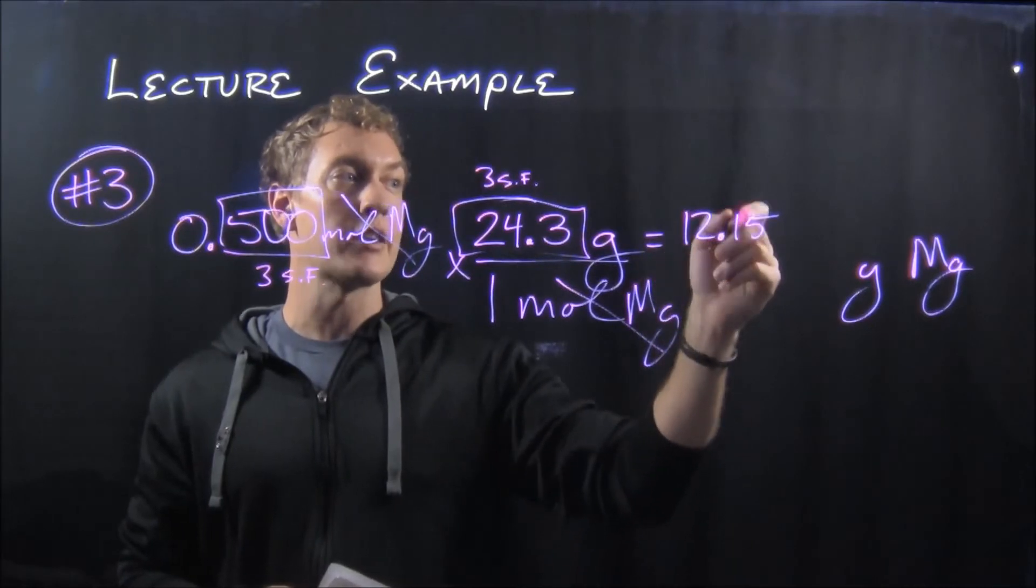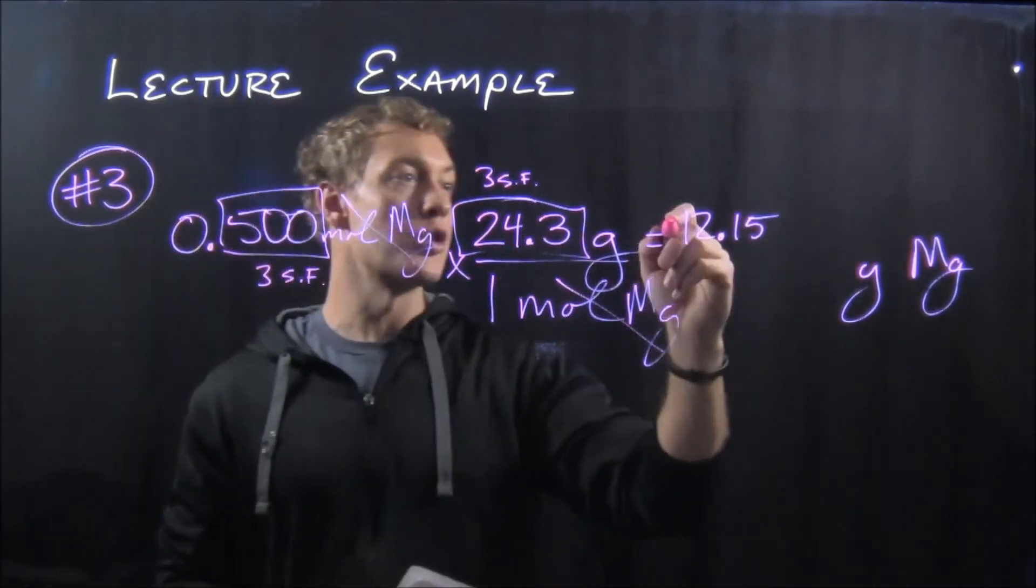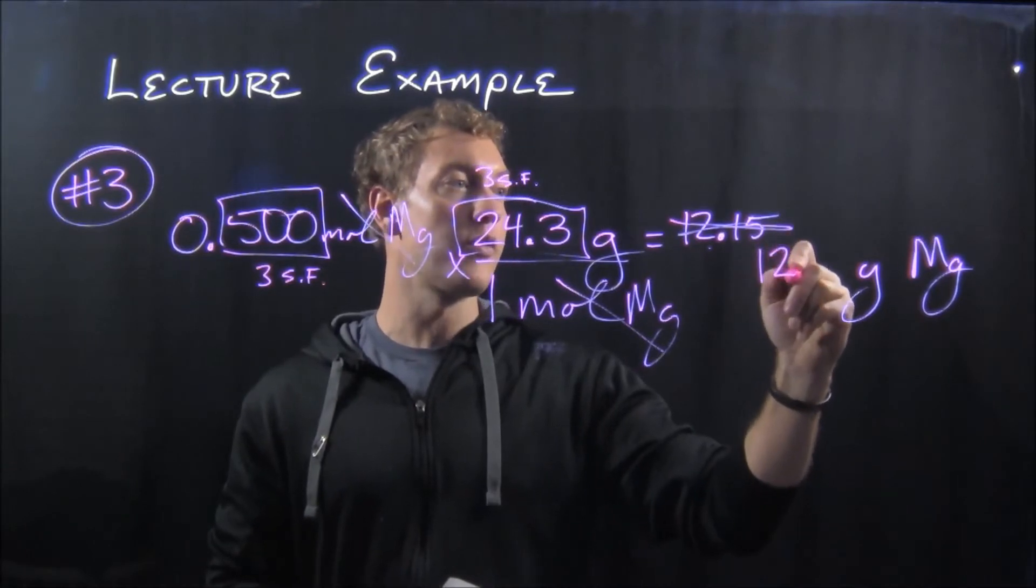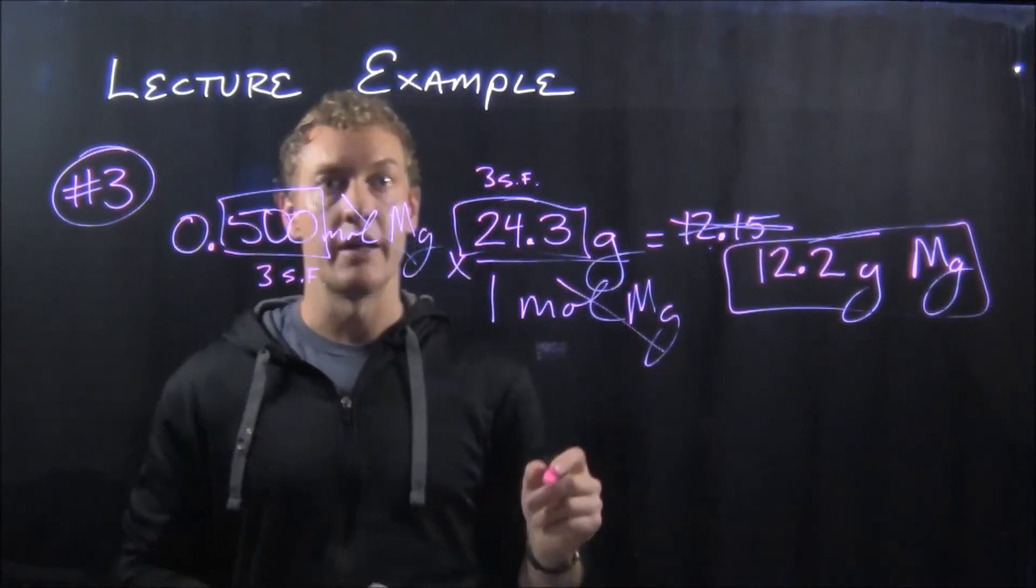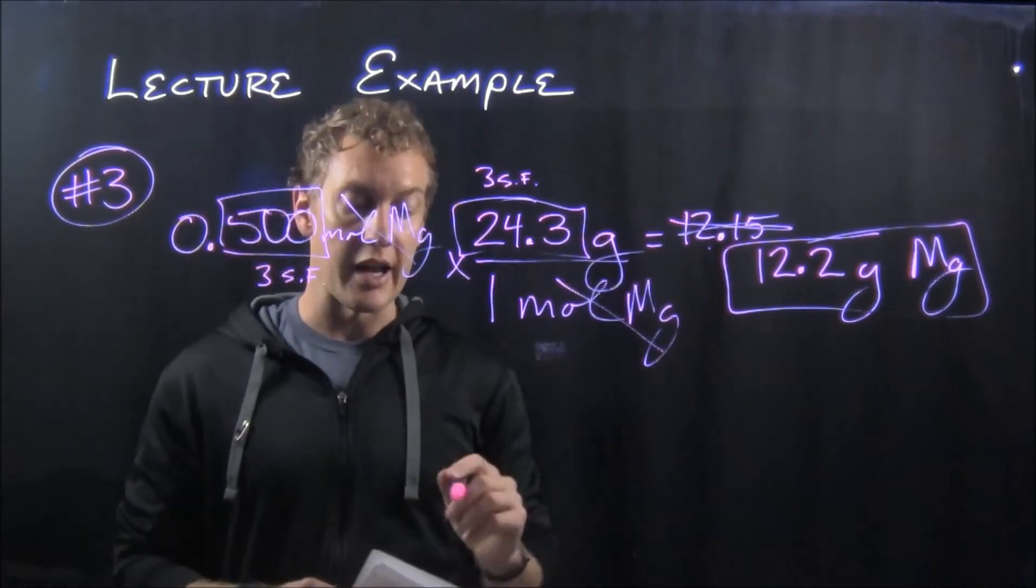So to round 12.15 to three significant figures, you'd keep one and two, and then the one after the fact - five would round the one up - so we are going to report this answer as 12.2 grams of magnesium, and that would be our accepted answer.